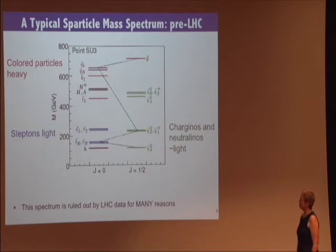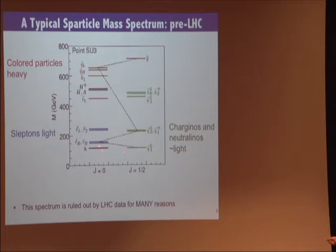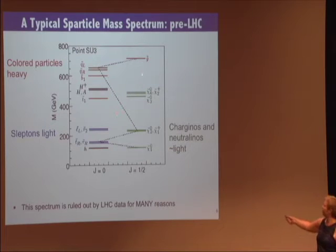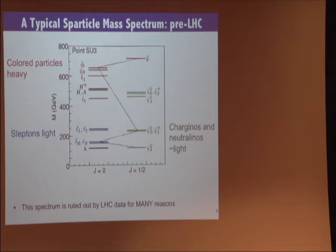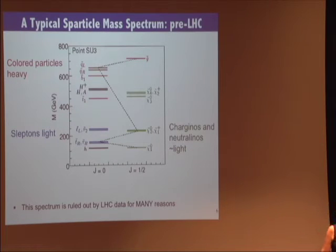Just to remind you of a typical SUSY spectrum — this one is completely ruled out by the LHC already for several reasons because the gluino was below 800 GeV. To illustrate the point: mostly the colored particles are quite heavy while the sleptons are relatively light. This doesn't have to be the case, but the production cross-section for colored particles is just much stronger at the LHC given that we're colliding colored particles. There are also charginos and neutralinos which are quite light.